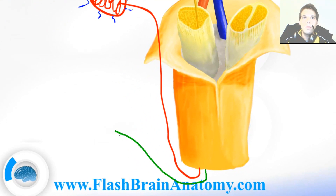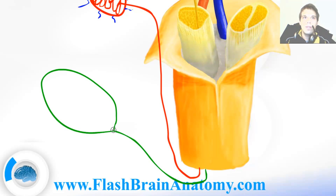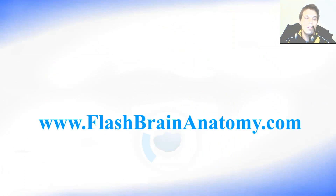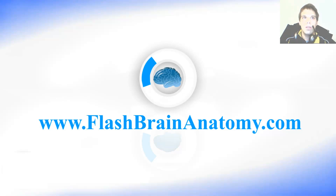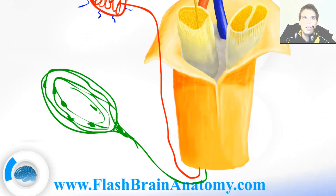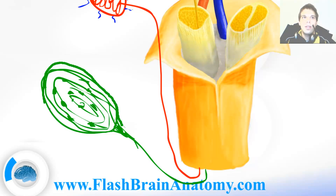Another group of receptors are the Pacinian corpuscles. They are located in the subcutis. If we make a cross-section of the Pacinian corpuscle, it would look something like this. Because they are located in the subcutis, they receive vibrations and not the light touches like the Meissner corpuscles do.